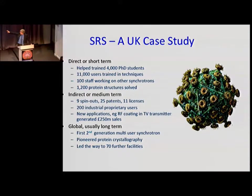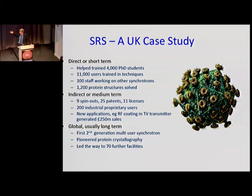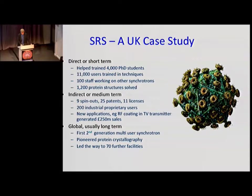In the medium term: nine spinouts, 25 patents, 11 licenses, 200 industrial proprietary users, and new applications like RF coating and television transmitters — things you wouldn't even think about — all coming from the knowledge gained working these machines. Long-term globally: the SRS was the first second-generation multi-user synchrotron, it pioneered protein crystallography — the methods for that were generated here in Daresbury — and it led the way to 70 further facilities worldwide. Every country now has one, and for good reason.